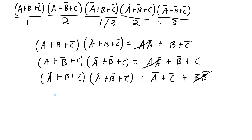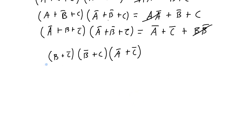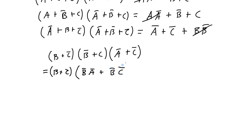Now I can combine these back together by ANDing the sum terms. So I get b OR NOT c, ANDed with NOT b OR c, ANDed with NOT a OR NOT c. I'm still not finished. What I can do is expand these two out and then multiply that result by NOT a OR NOT c. Expanding using FOIL: first is NOT b·NOT a, outside is NOT b·NOT c, inside is c·NOT a, and last is c·NOT c. The c AND NOT c goes away — it becomes zero.